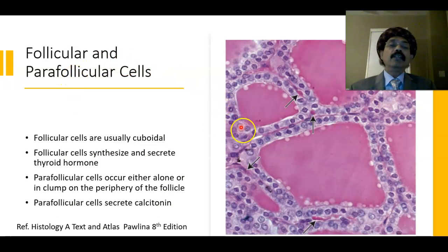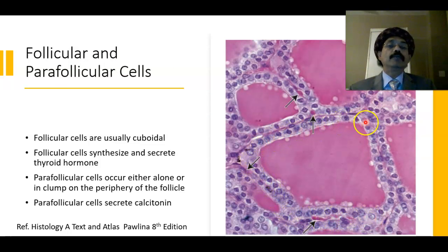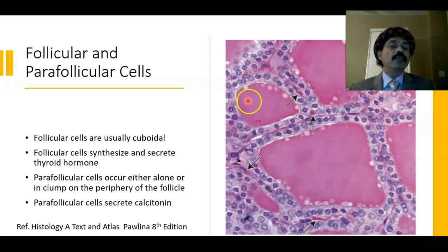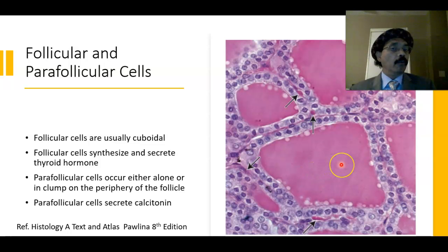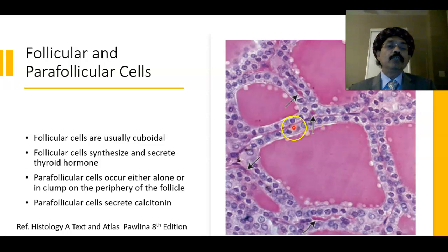The follicular cells are simple cuboidal epithelium in normal thyroid function. The colloid inside shows that two follicles are not homogenously the same size — size is variable. The colloid is usually acidophilic, rich in protein and thyroglobulin. Between the follicles we have connective tissue, blood vessels, and parafollicular cells.